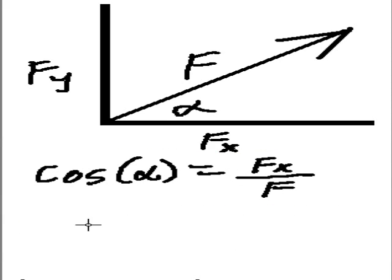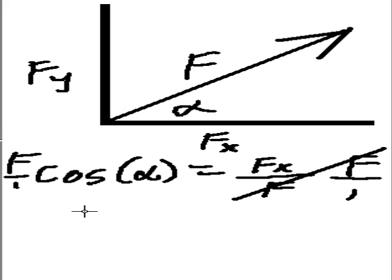Now what do we do with this? We multiply both sides by f. f over 1, f over 1. And these guys cancel out. And what does that leave us with?